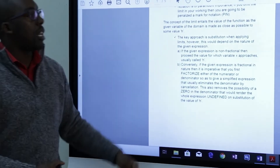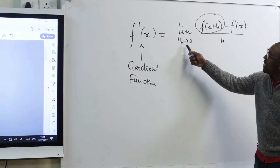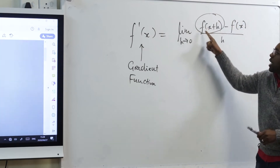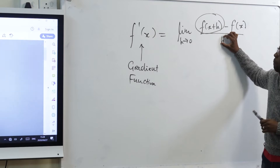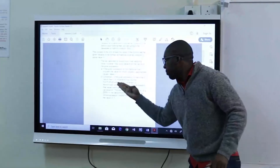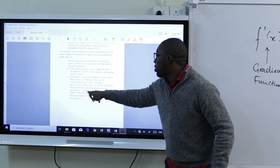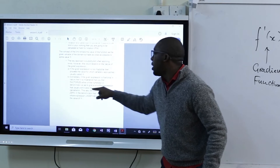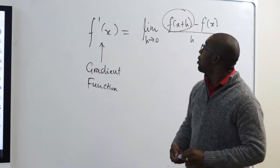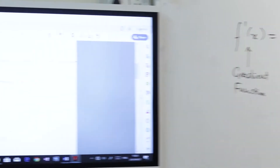If the given expression is fractional, the first thing you do is factorize — either the numerator or the denominator — to give a simpler expression. This eliminates the option of having h equal to zero in the denominator, which would render the whole expression undefined. That is why we factorize: to eliminate the denominator by cancellation and remove the possibility of a zero in the denominator.